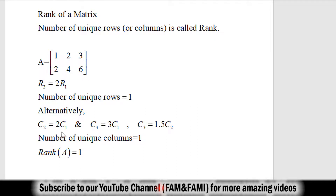The number of unique columns in matrix A is just 1. According to the definition of rank, the number of unique rows in matrix A is 1 and the number of unique columns is also 1. So we say that the rank of matrix A is 1.